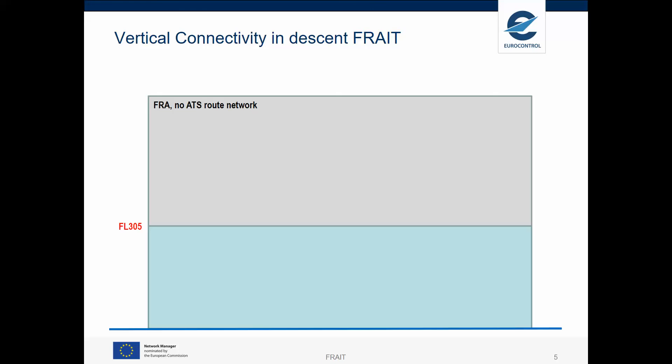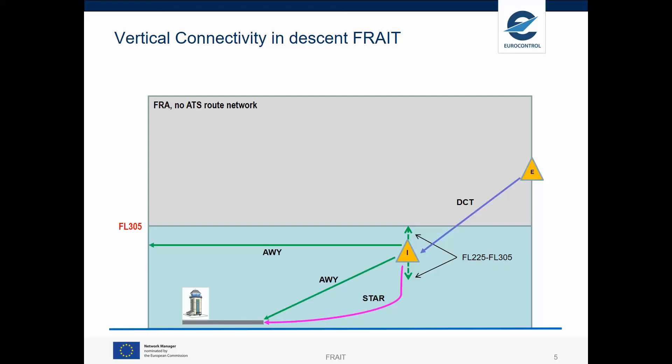Another very similar example. Here it's an entry point into the free airspace Italy, direct to an intermediate point that you should reach at a level between flight level 225 to flight level 305. From there onwards, the same three options as before.